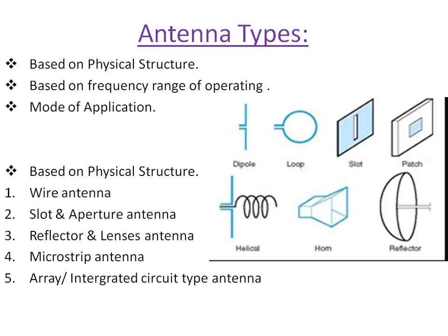There are different types of antennas available. Antenna types can be classified into three types: based on their physical structure, based on the frequency range of operation, and based on the mode of application. Physical structure means the format of its physical shape. Frequency range means whether it is a high, low, or very high frequency operating antenna. Mode of application means the application you want to use the antenna for, like point-to-point communication or broadcasting.